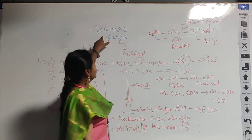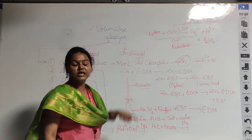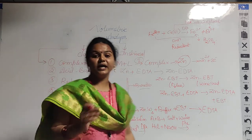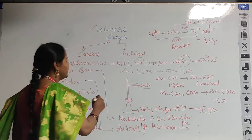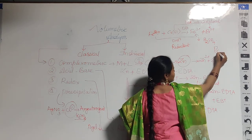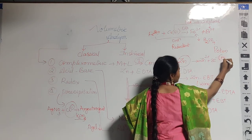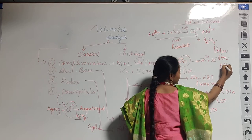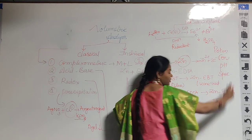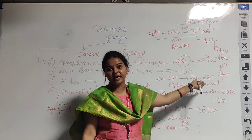Next, coming to instrumental analysis. In instrumental analysis, different kinds of instruments are used — such as potentiometers, conductometers, pH meters, and spectrophotometers.